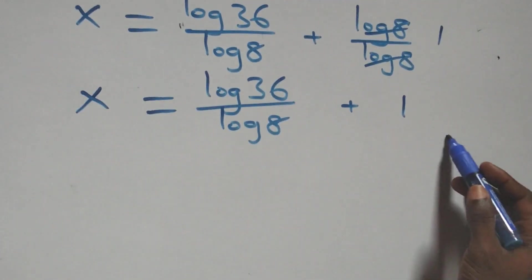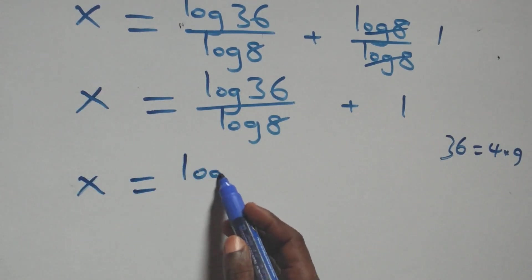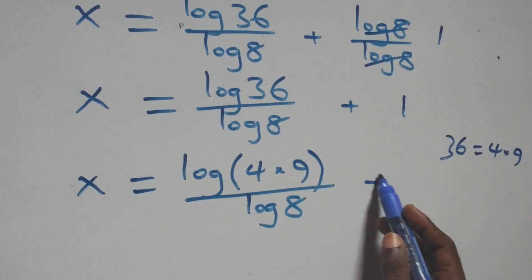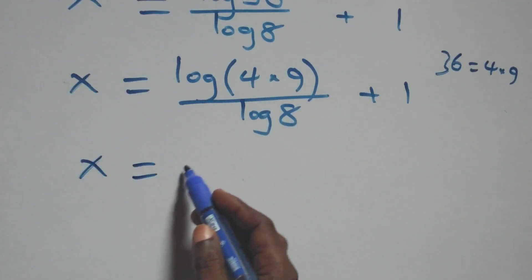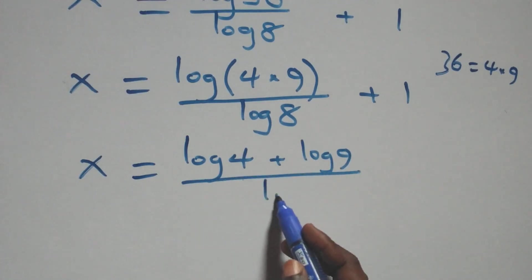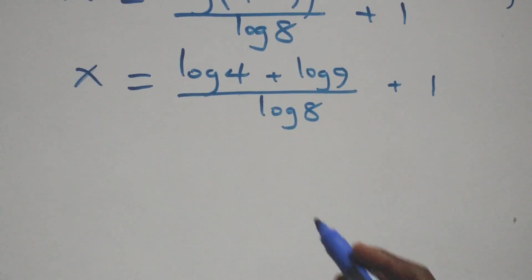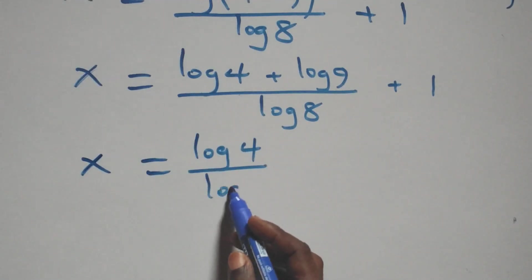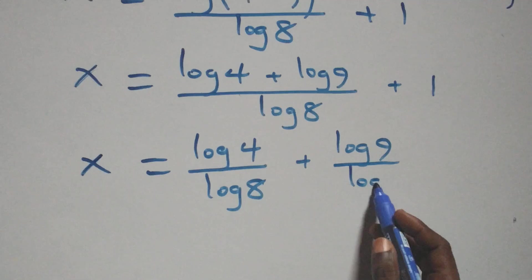We express 36 as 4 times 9, giving x equals log(4 times 9) over log 8 plus 1. Applying the product rule of logarithms, this becomes x equals log 4 plus log 9 over log 8 plus 1. We separate into two fractions: x equals log 4 over log 8 plus log 9 over log 8 plus 1.